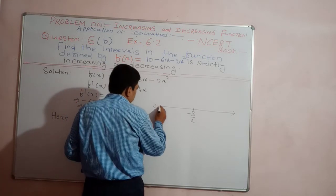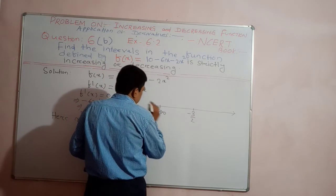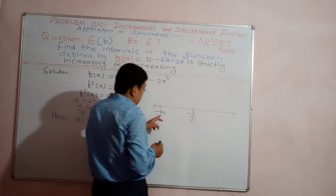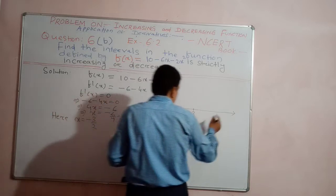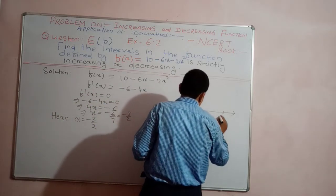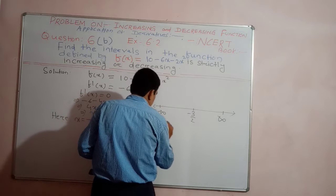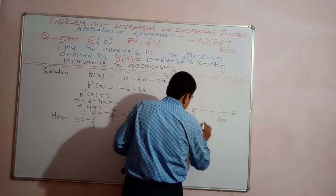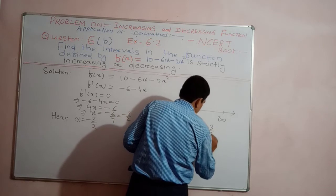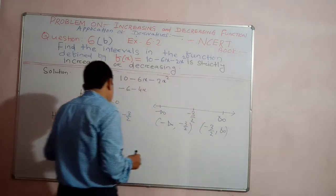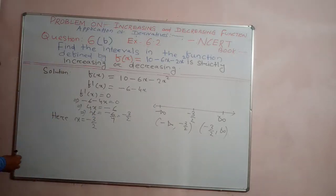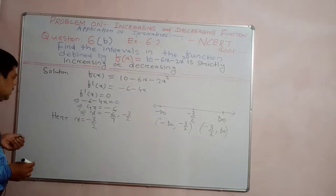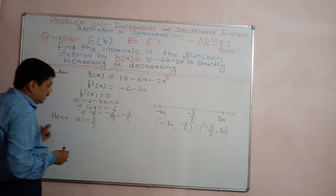We get two disjoint intervals: one is (-∞, -3/2) and another is (-3/2, ∞). In these two intervals we have to find in which interval the function is strictly increasing and in which interval the function is strictly decreasing.